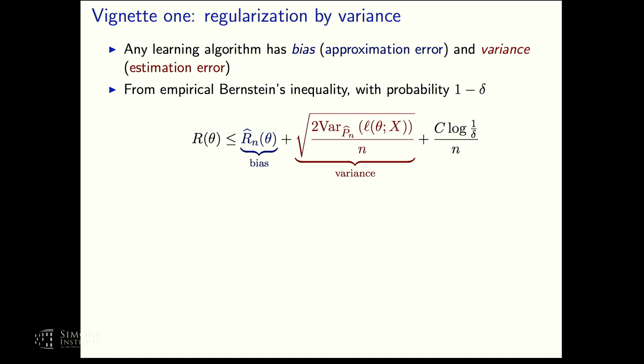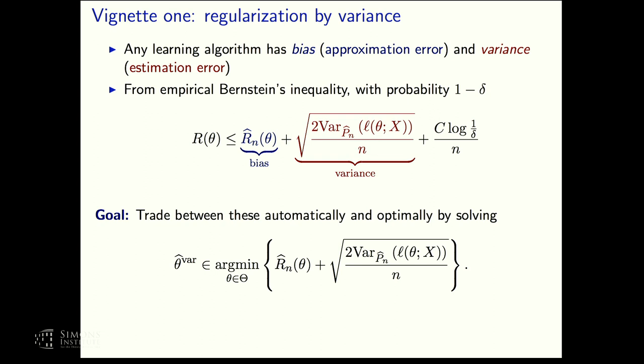All right, so the first vignette I'm going to talk about is trying to regularize a learning problem by the variance of our losses. So any learning algorithm, if you've taken your basic statistics class, you know there's a bias and a variance. Or we can sometimes call this approximation error and estimation error. And what that ends up looking like is that you can apply your favorite concentration inequalities, but basically the true risk of any decision, any parameter vector of data is upper bounded by your empirical risk. We can call that our bias or our estimation error, plus something like the variance, or the square root of the variance over n, plus some term which looks like one on n. And this happens with extremely high probability. So then you say, well, if this is true for all theta, why don't I just trade between this bias and variance automatically and minimize the sum of these two quantities? That'd be pretty good. Then we're going to get a certificate that we're within one on n of whatever we get out of this. Seems like a reasonable idea.